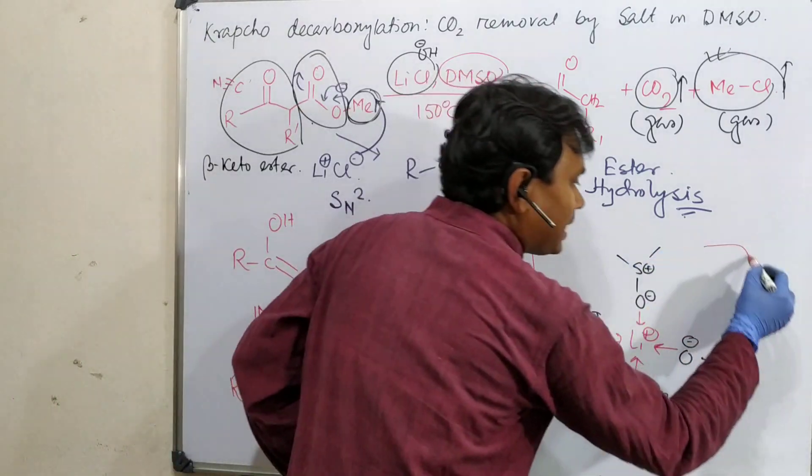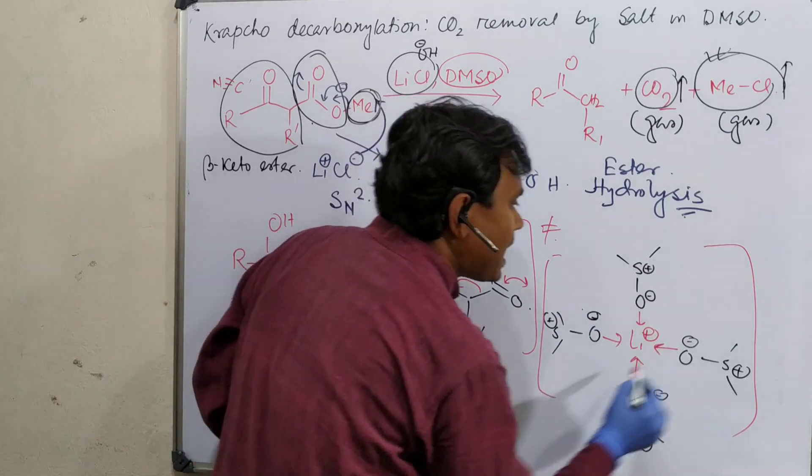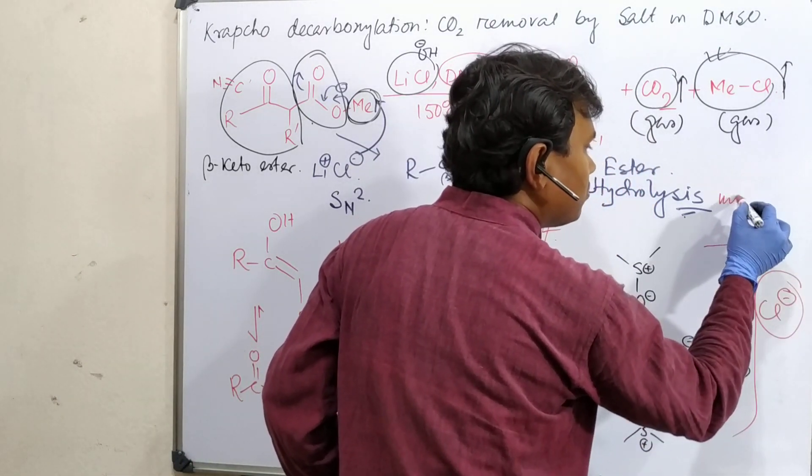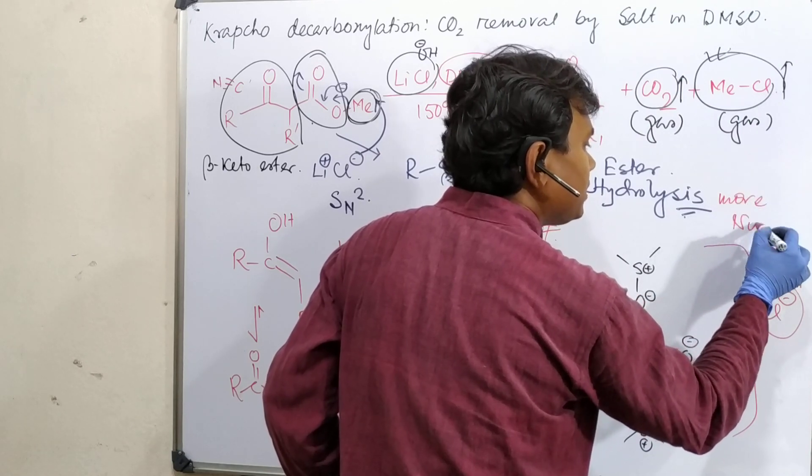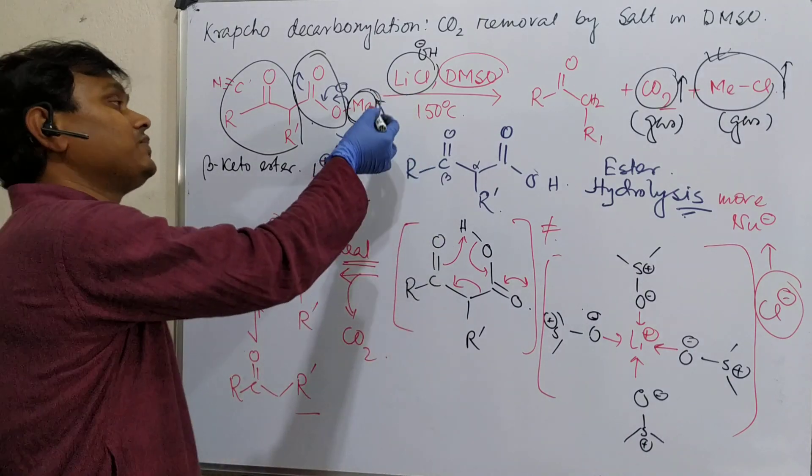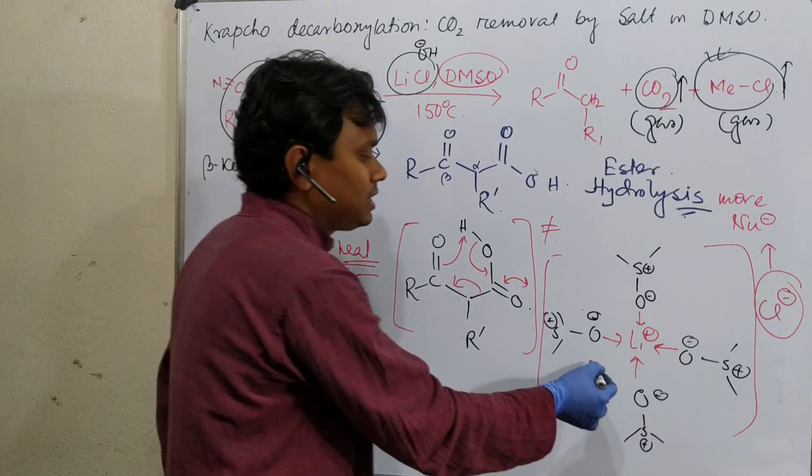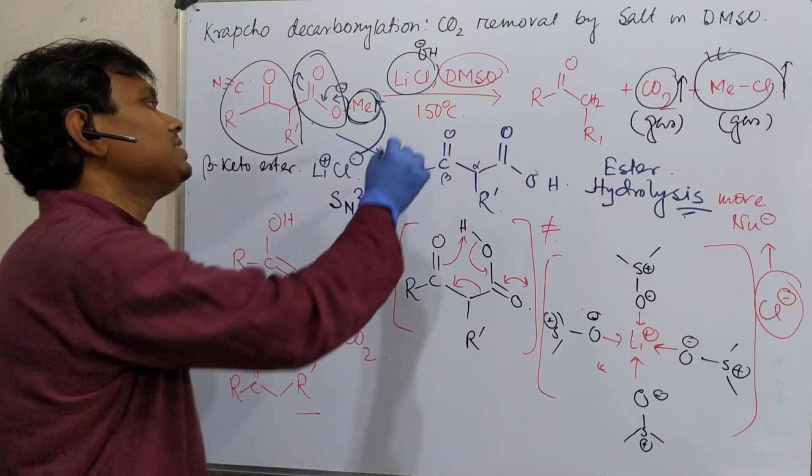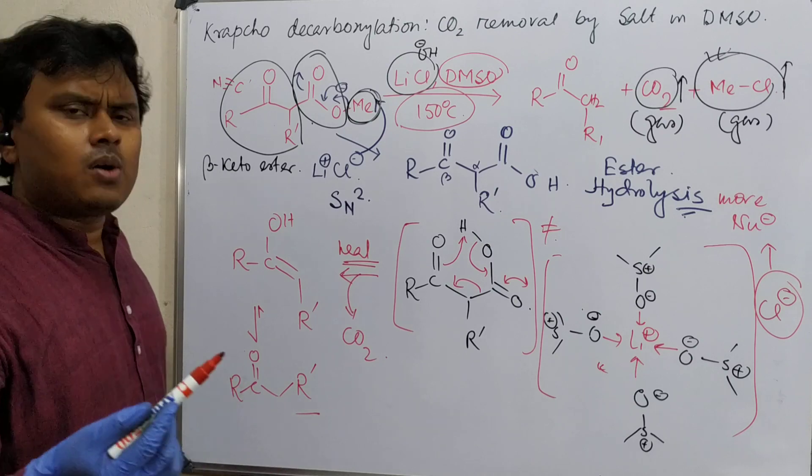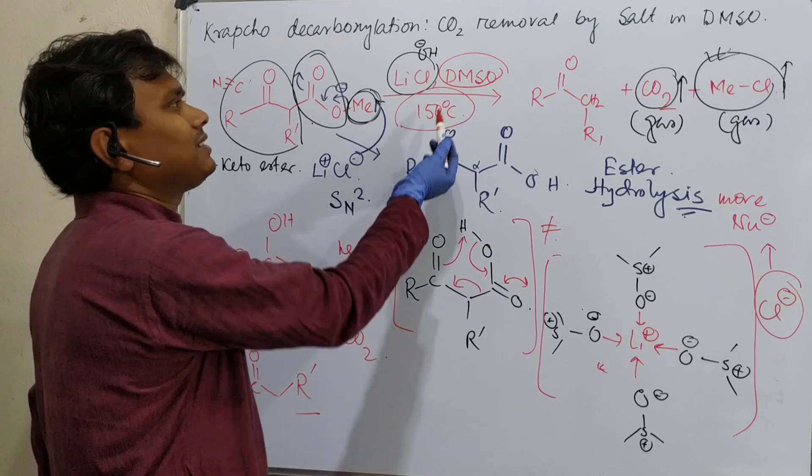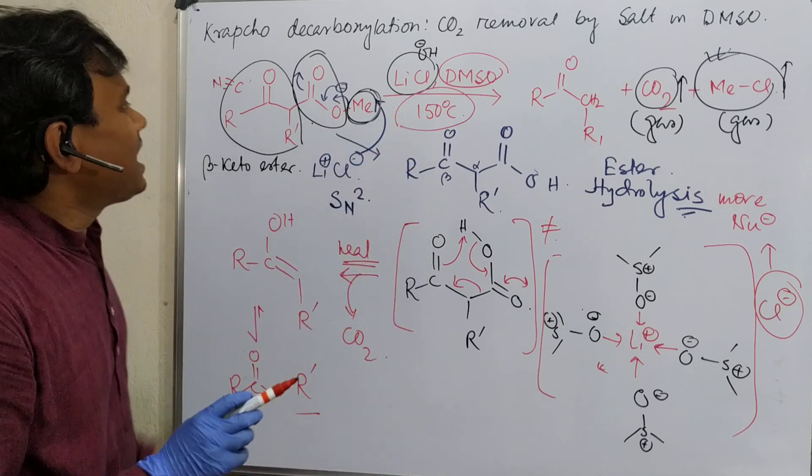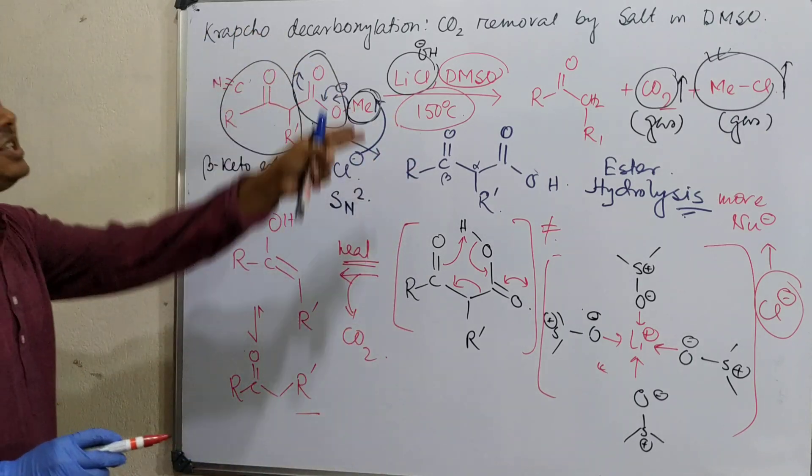So if the cation is solvated by the solvent, then anion becomes free. And if it is free, this is more nucleophilic - this is a better nucleophile. That's why its activity is enhanced. So that is the reason to use DMSO. And second point - this is 150 degrees centigrade, and DMSO boiling point is around 180, so it can handle the temperature very easily.